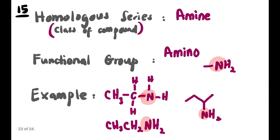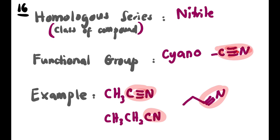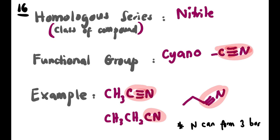Next is amine, with functional group amino (C–N, single bond). Circle the N. Wherever you see a single-bonded N in a structure — even if it has CH₃ instead of H attached — that is the amino group. Last is nitrile, with functional group cyano (C≡N, triple bond). Circle C≡N each time you see it. Remember: nitrogen can form three bonds — single-single, single-double, or one triple bond as in nitrile.